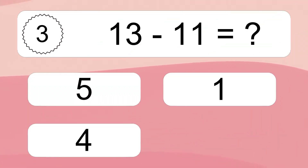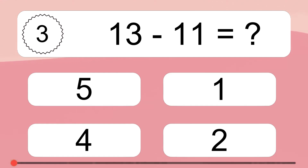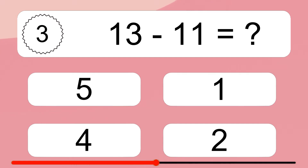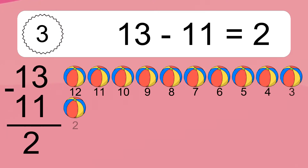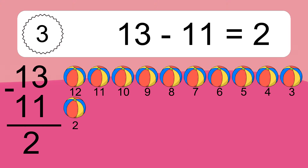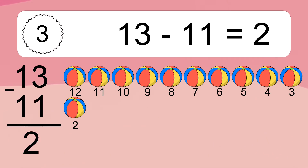13 minus 11 equals what? 13 minus 11 equals 2. Let's count it: 12, 11, 10, 9, 8, 7, 6, 5, 4, 3, 2.